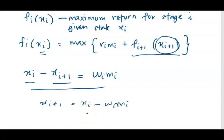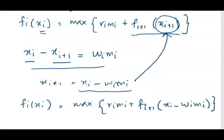If we rearrange this equation, it will be x_{i+1} equals x_i minus w_i * m_i. We can substitute this into the function, so after substitution our function becomes f_i(x_i) equals the maximum of the return r_i * m_i plus the optimal solution from another stage.